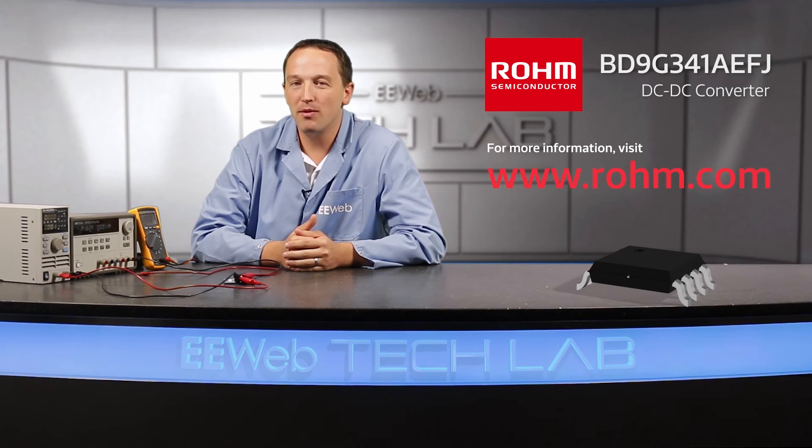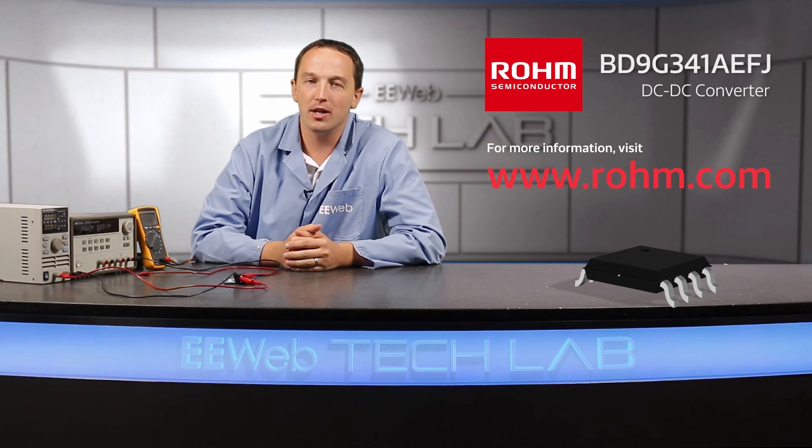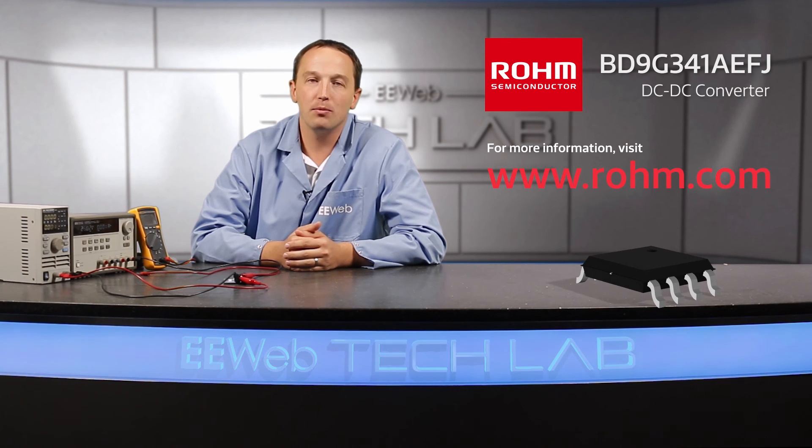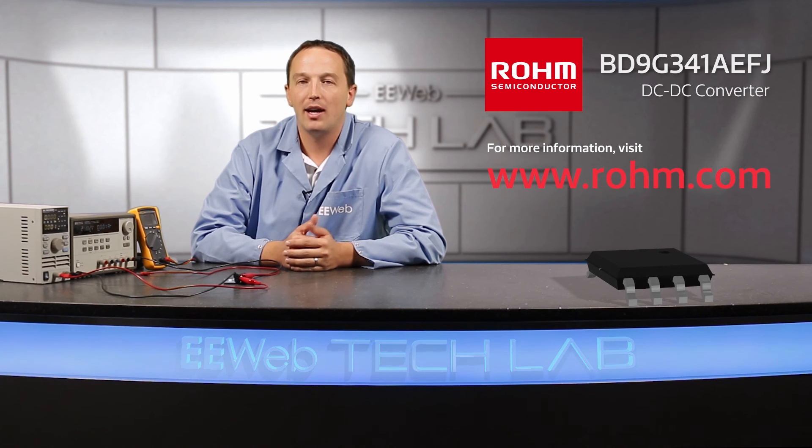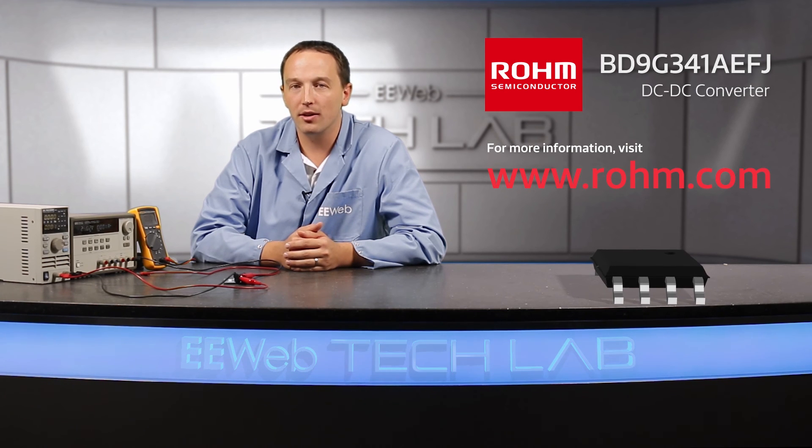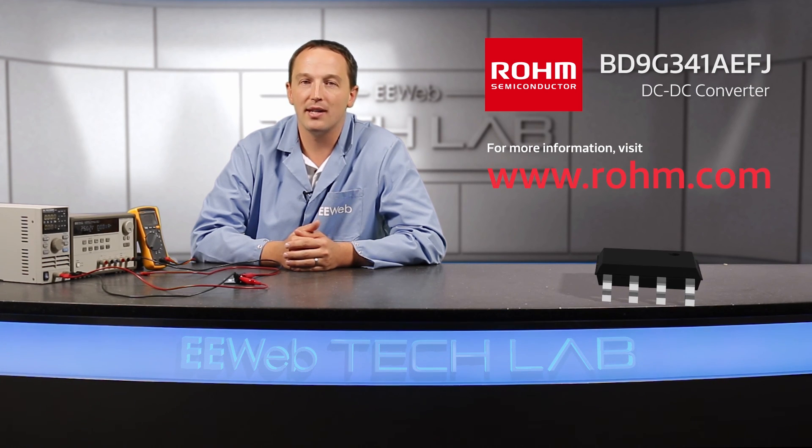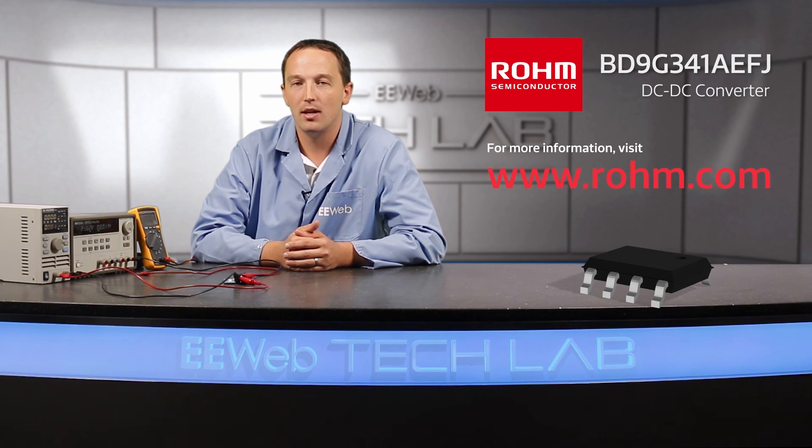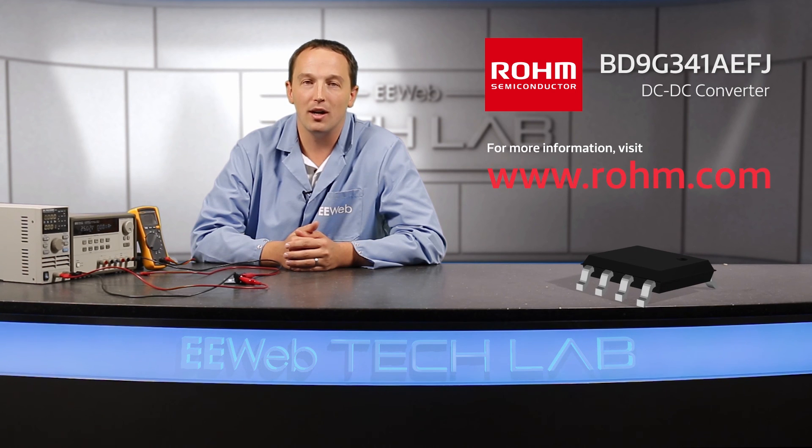ROHM's BD9G341AEFJ accepts a wide 12 to 76-volt input and reduces design effort thanks to its integrated FET and current mode architecture. A switching frequency up to 750 kilohertz allows for smaller inductors and provides high-efficiency variable output voltage from 1 volt to VCC with 3 amps of current. For more information, visit ROHM.com.